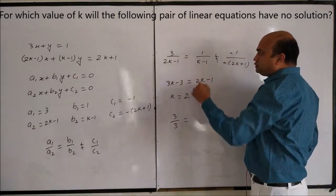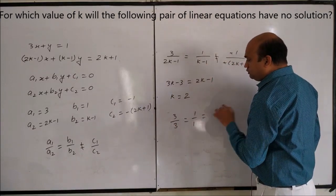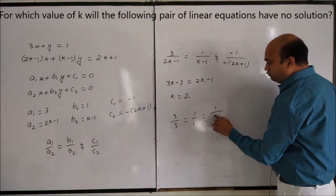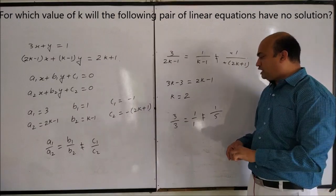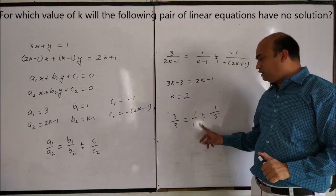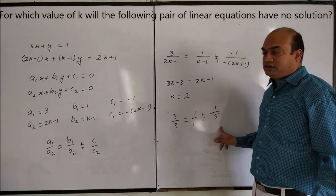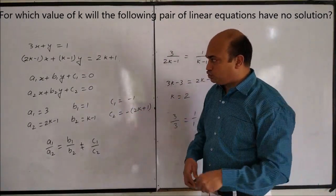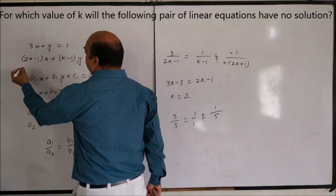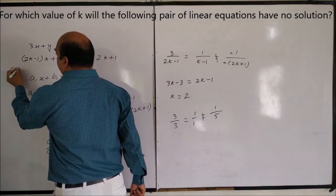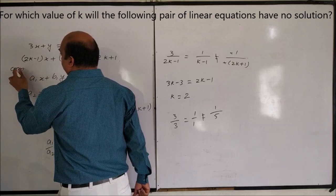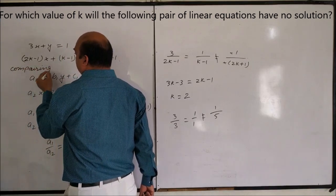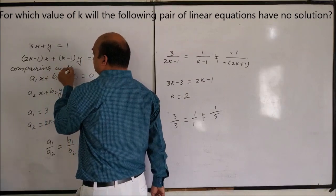If we put k equal to 2: the first ratio becomes 3 by 3, the second becomes 1 by 1, and the third becomes 1 by 5. So the first two ratios are equal and the last one is not equal — this satisfies the condition for no solution. Therefore k equals 2.